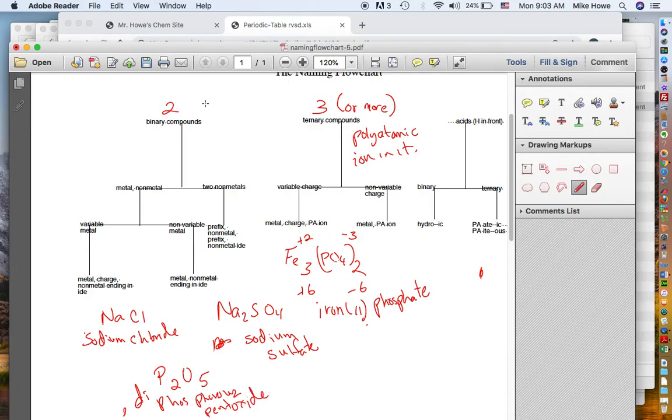Now I'm going to write the prefixes right here. Here they are. Mono, di, tri, tetra, penta, hexa, hepta or hept, oct, non, and dec. That's one through ten. So if I had, say, P4O10, I'm not going to write this one down because of room, but it would be tetraphosphorus-decoxide.